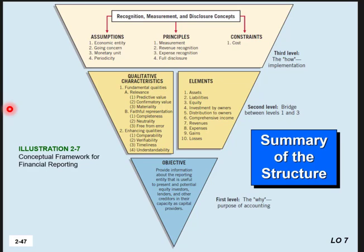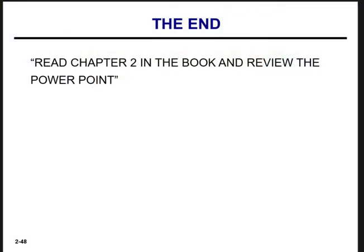In summary, the conceptual framework for financial reporting serves as a roadmap with three levels: the objective (the why), the qualitative characteristics and elements (definitions and qualities of information), and the recognition, measurement, and disclosure concepts — including assumptions, principles, and constraints. This is a very important framework to keep and reference often. That's the end of our lecture for today. Please read chapter two again and review the PowerPoint in Moodle. Thank you.